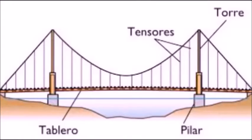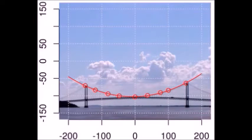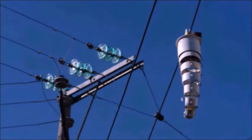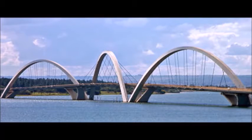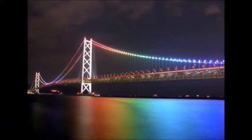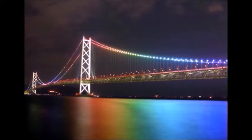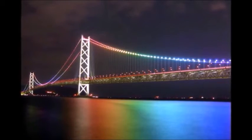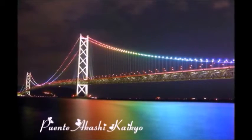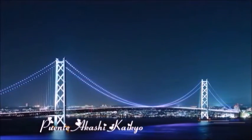Cable suspendido. Suponga que un cable flexible de alambre o cuerda pesada está suspendida entre dos soportes verticales. Un ejemplo físico sería uno de los cables que soporta un puente o un cable telefónico entre dos postes. Los cables son usados generalmente en estructuras de ingeniería para soportar y transmitir cargas de un miembro, como en puentes colgantes y ruedas de tranvía, donde los cables constituyen un elemento principal de carga de la estructura.